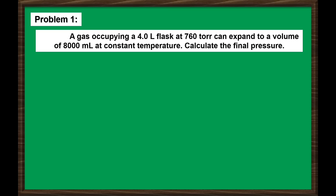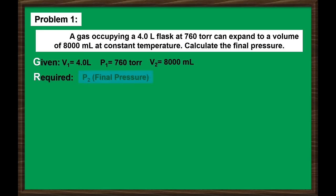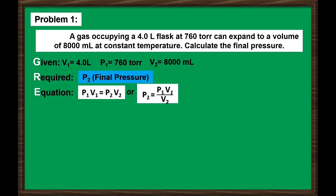Let's identify the given, or the known values. We have the initial volume, which is 4.0 liters; initial pressure, 760 torr; and the final volume, which is 8,000 milliliters. For the required, we are looking for the final pressure of the gas. We will use Boyle's Law equation, or the derived version: final pressure equals the product of initial pressure times initial volume divided by final volume. Before substituting values, let us first convert the final volume from milliliters to liters.